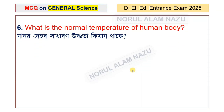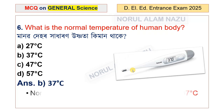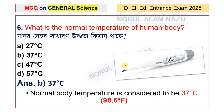What is the normal temperature of the human body? It is 37 degrees Celsius, or 98.6 degrees Fahrenheit.